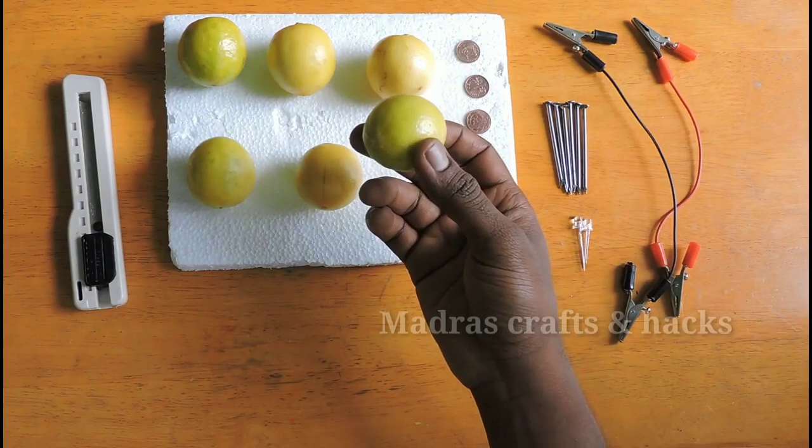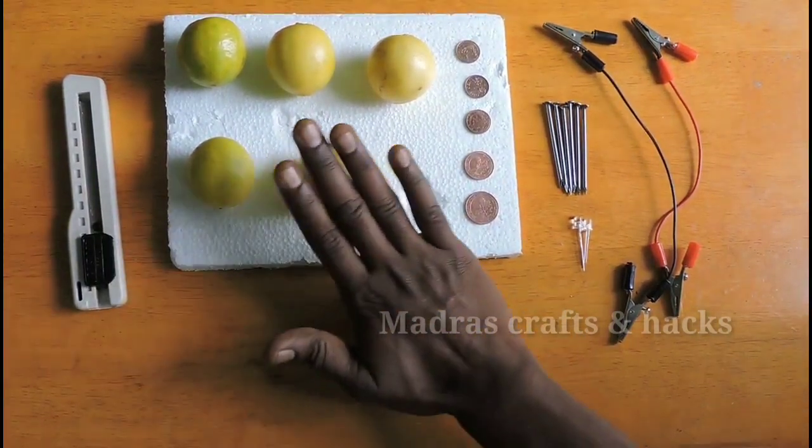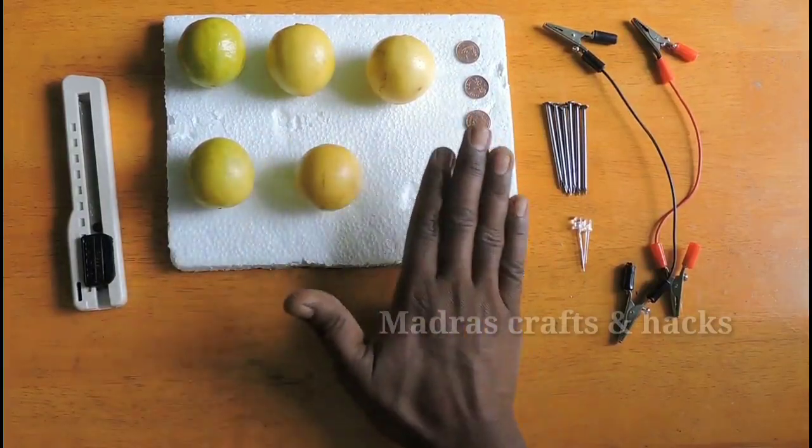First, we will take one lemon and roll it nicely in order to produce more juice. The juice inside the lemon will act as electrolyte in this experiment.